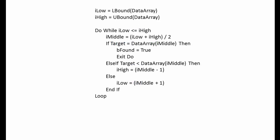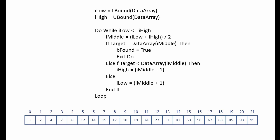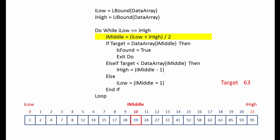So how would you do that programmatically? Here's some pseudocode. Here's our array again, and our target is 63. The first thing we do is identify the lower and the upper bounds of the array, and we set a couple of pointers to these values. Now we get into a loop. I'll talk about the exit condition in just a moment. The first thing we do is add the high and low pointers together and divide by two — this gives us the middle. And then we ask the question: is the target equal to the middle value?